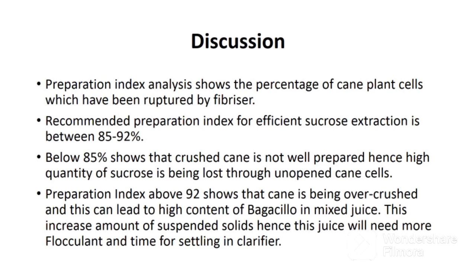The recommended preparation index for efficient sucrose extraction is between 85% and 92%. Below 85% shows that the crushed cane is not well prepared; hence, a high quantity of sucrose is being lost through unopened cane cells. In this case, the lab analyst should inform the mill engineer to stop milling and weld or replace the fibrizer tips.